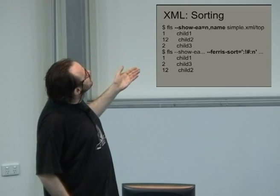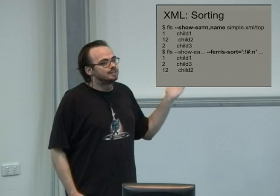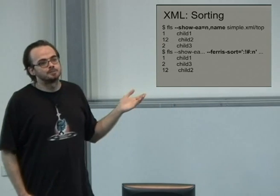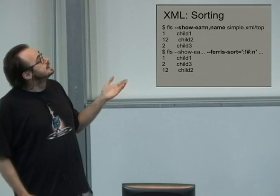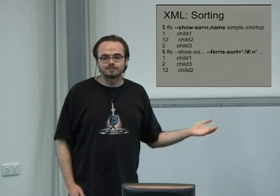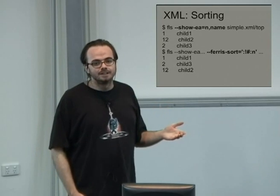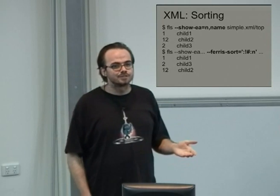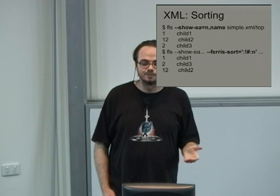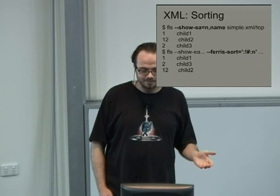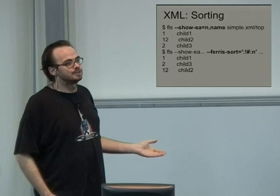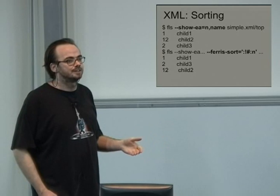If you want to sort in reverse numeric order based on attribute n, you get an LS-style sort of that directory. Sorting within the virtual file system is itself implemented as a virtual file system — so you take a file system, you take a sort order, and it gives you back a resulting file system.